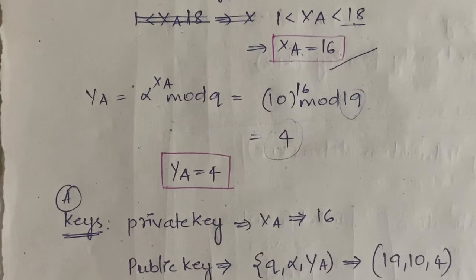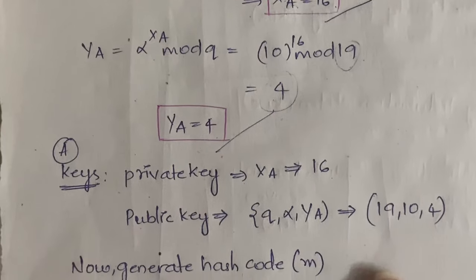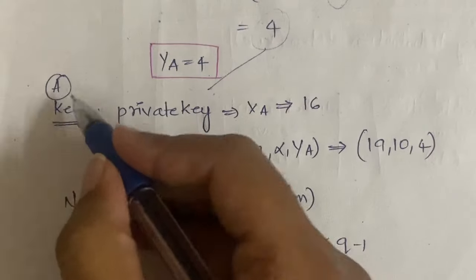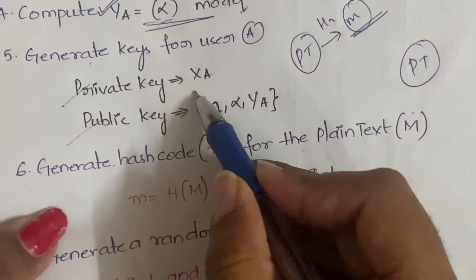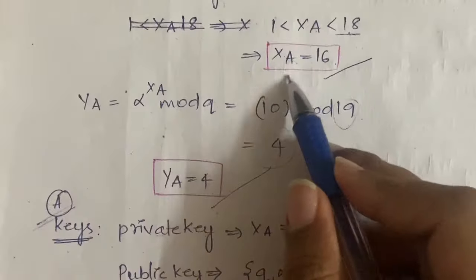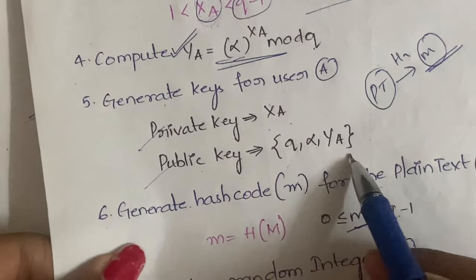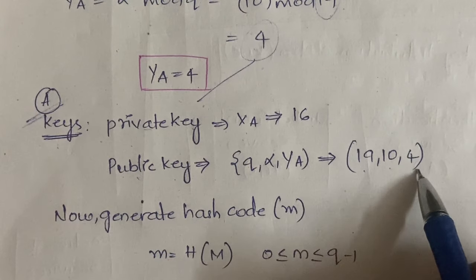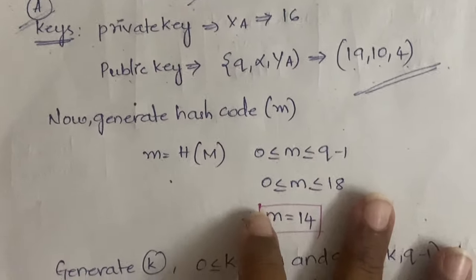You can use a calculator to compute 10^16 mod 19 = 4. Now generate the keys for user A: the private key is xa = 16, and the public key is (q, alpha, ya) = (19, 10, 4).